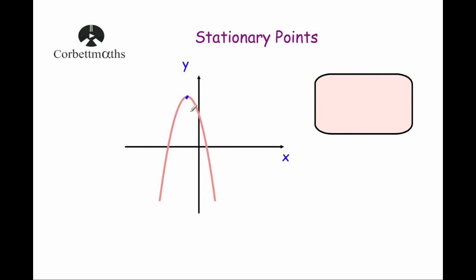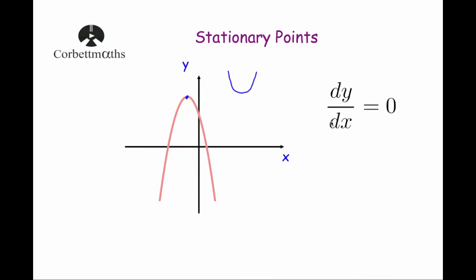There are maximum turning points, called maxima if there's more than one. There are minimum turning points, called minima if there's more than one, and there are also points of inflection. In this video we're going to focus on maxima and minima. To find the coordinates of stationary points, remember that dy/dx is equal to zero — so when you differentiate, the gradient function will be equal to zero at those stationary points.